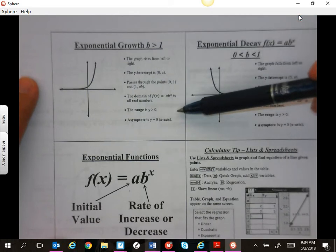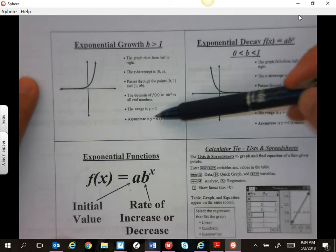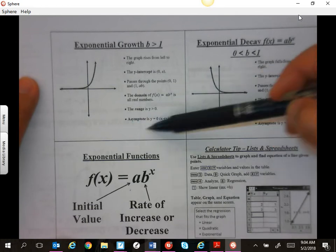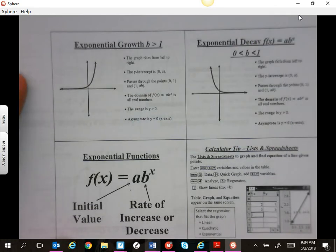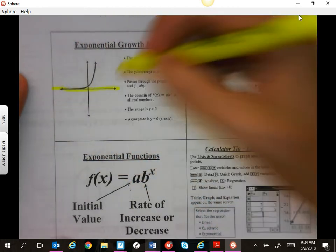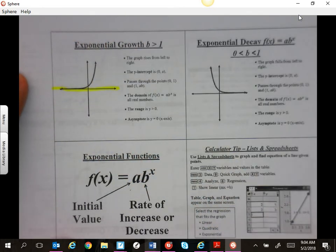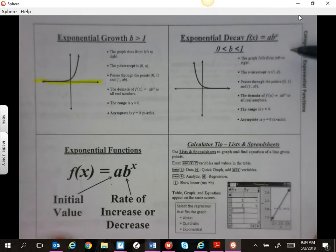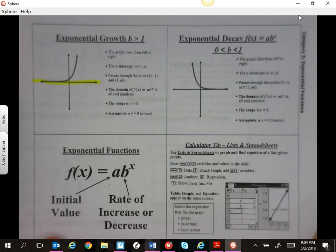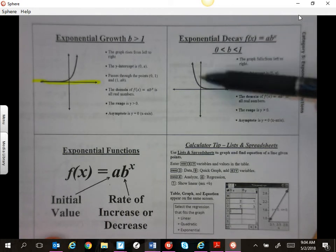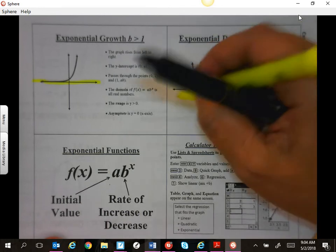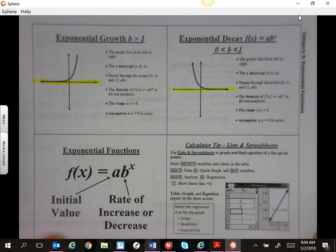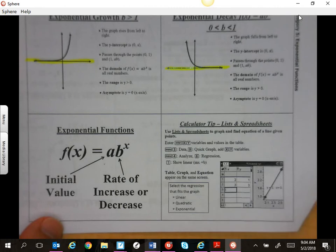Make sure that you remember what an asymptote is. Remember, it's going to approach this x axis, but it's not actually going to touch it. And then if b is in between 0 and 1, meaning it is a decimal or fraction less than 1, but not negative, then it is a decay and it's going down. You still have an asymptote here.